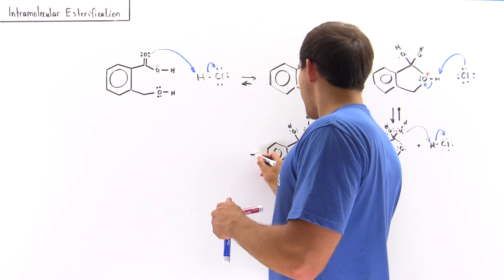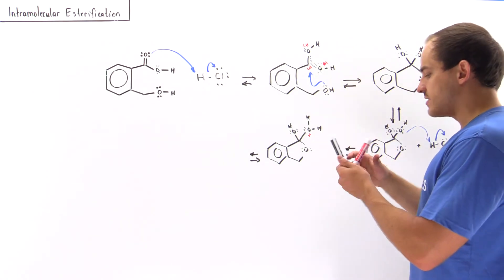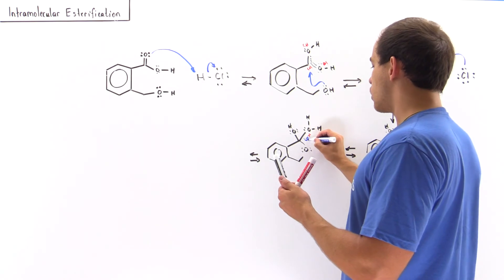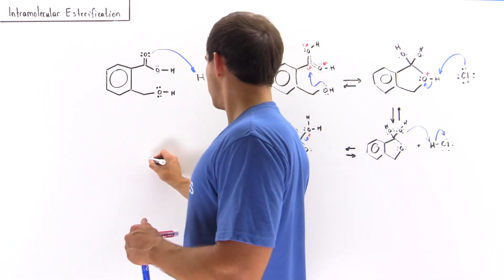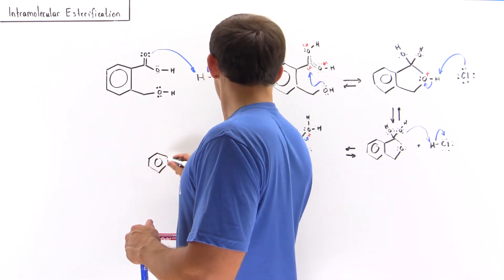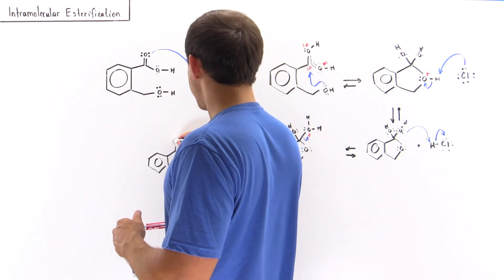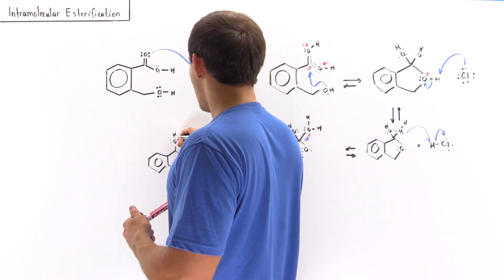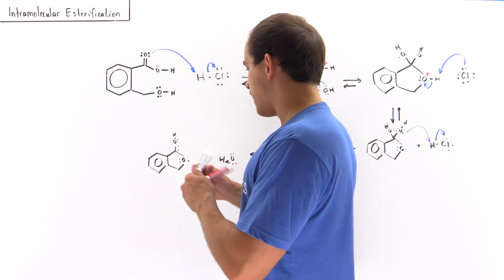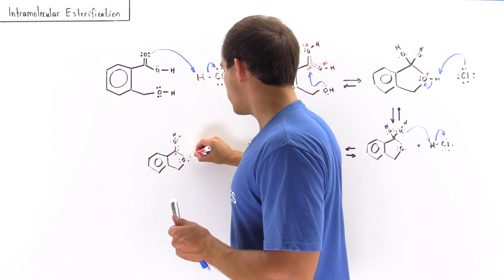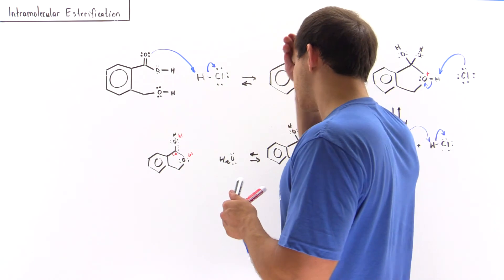In the next step, since water is now a good leaving group, this bond breaks and dissociates, forming a water molecule and a new intermediate compound. We have the benzene ring and the remaining oxygen, and this intermediate has resonance stabilization — the positive charge can be delocalized here, here, or here among these three atoms.